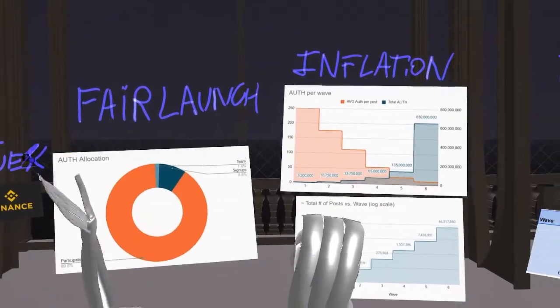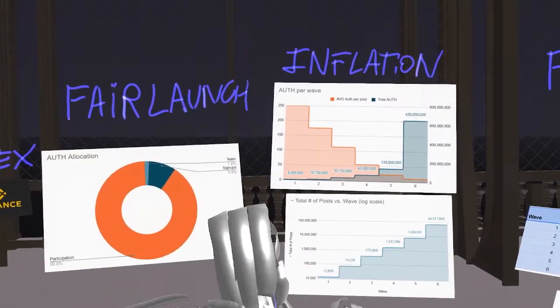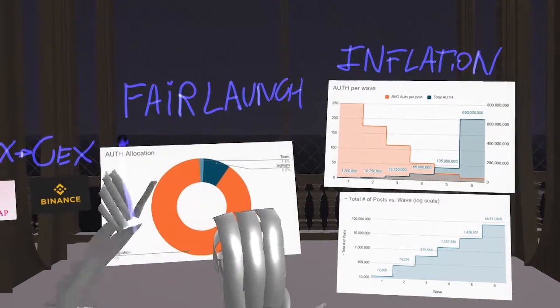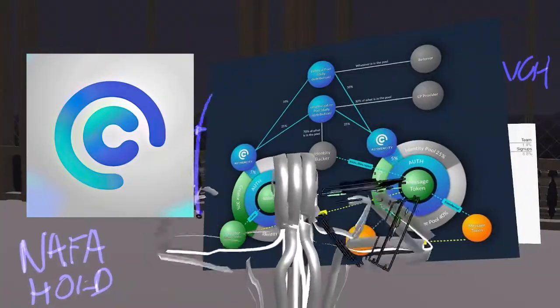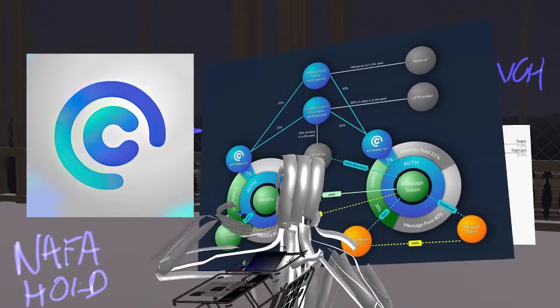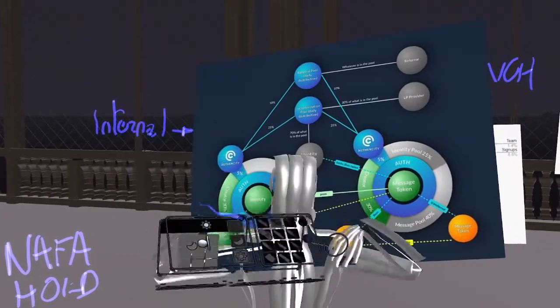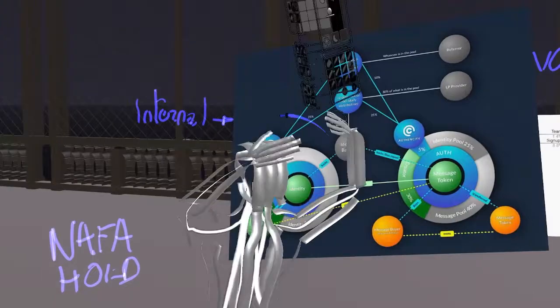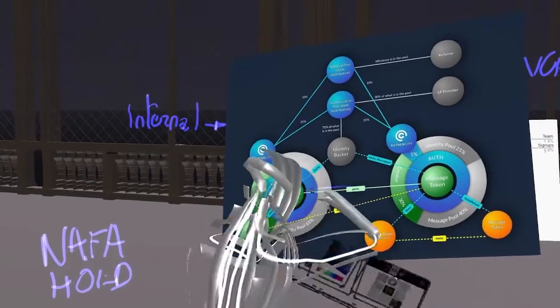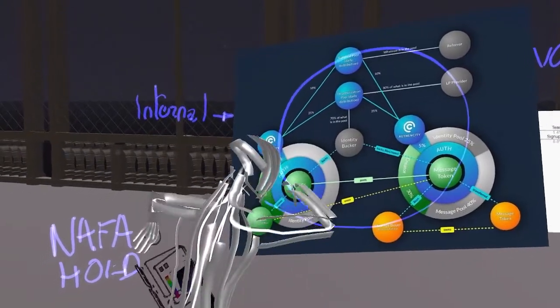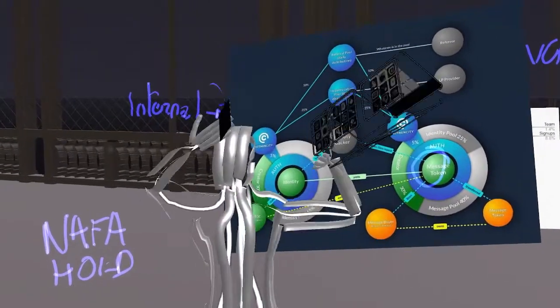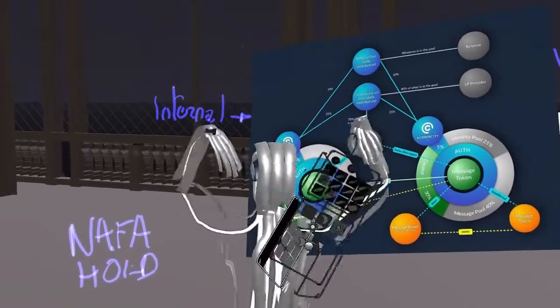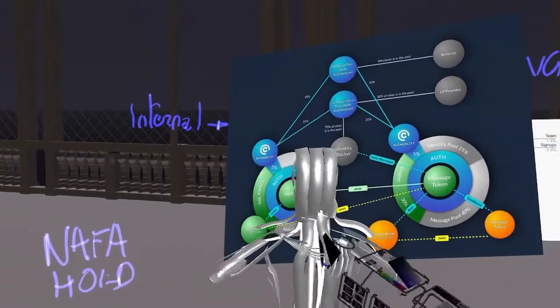Hello everybody, Lester here, and today we're going to do a deep dive in the tokenomics of Authenticity.io. Authenticity.io is a social media that is entirely based on the blockchain. Last video I presented how the system functions, the concept of identity and backing somebody, meaning investing in a person. So you can go watch this video right now if you haven't watched it.